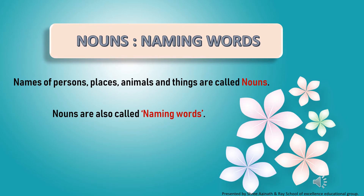So names of persons, places, animals and things are called nouns. Inky namo ko hum sanjya kehta hai. Nouns are also called naming words. Nouns ko hum naming words bhi kehta hai.